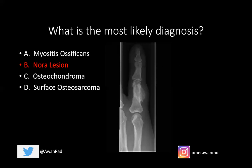An osteochondroma would be a consideration — it's a benign cartilaginous tumor — but a couple of things argue against it. First, this is not metaphyseal; it's more diaphyseal, maybe metadiaphyseal, but certainly not purely metaphyseal. Another characteristic of osteochondroma is that they usually point away from the joint, but this is neutral in position. Most importantly, there's no medullary continuity with the bone — an osteochondroma always has medullary continuity. Here it's coming directly off the bone with no continuity, making osteochondroma much less likely.